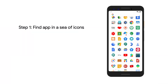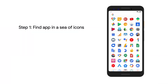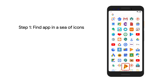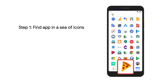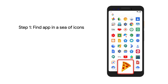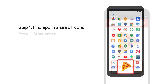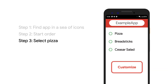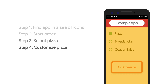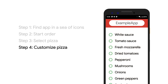Let's take the user journey of ordering a pizza. It could be quite a process if your app isn't voice enabled. First, your user will have to find the app icon in the sea of icons, then find in the app where they can start an order, then select if they want to order a pizza, and finally customize their pizza to include the sauces, cheeses, and toppings they want.